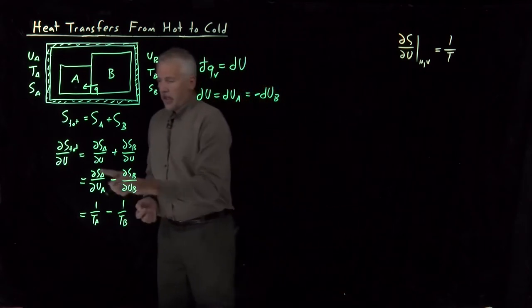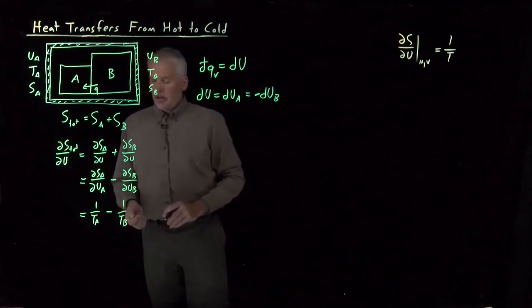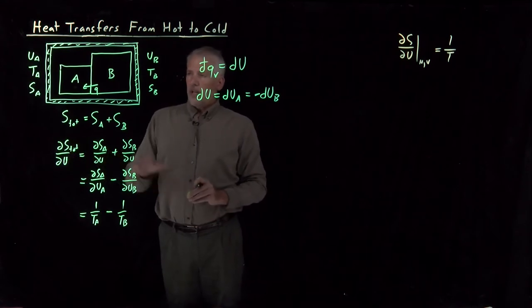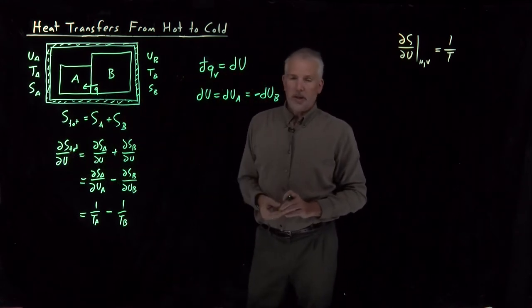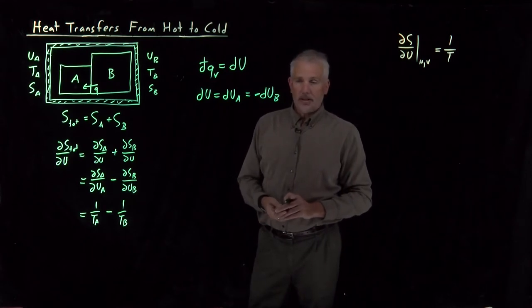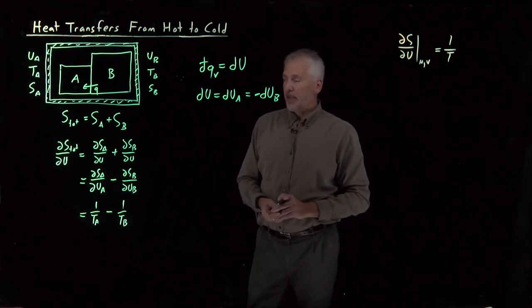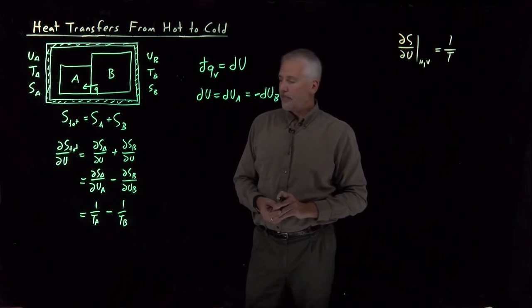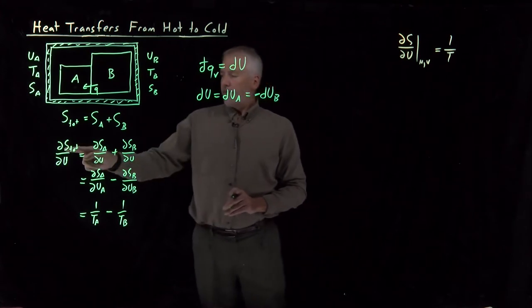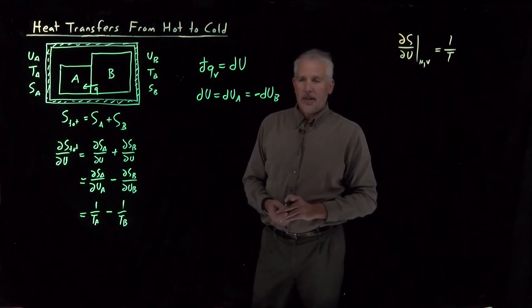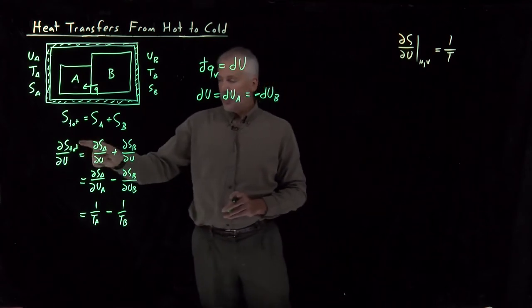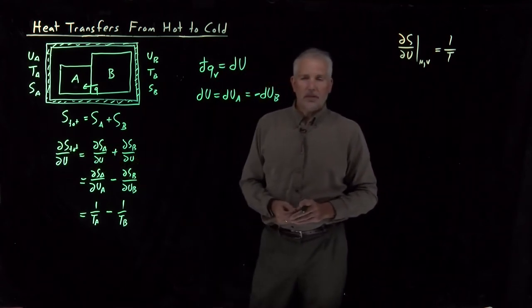So we want to know what's happening to the entropy of the system. We want the entropy of the system to increase. The thing that will happen spontaneously is the thing that increases the entropy. That's the most likely outcome. So if dS/dU is positive, then that's the spontaneous direction. But if dS/dU is negative, if the entropy is decreasing, that's the non-spontaneous direction.